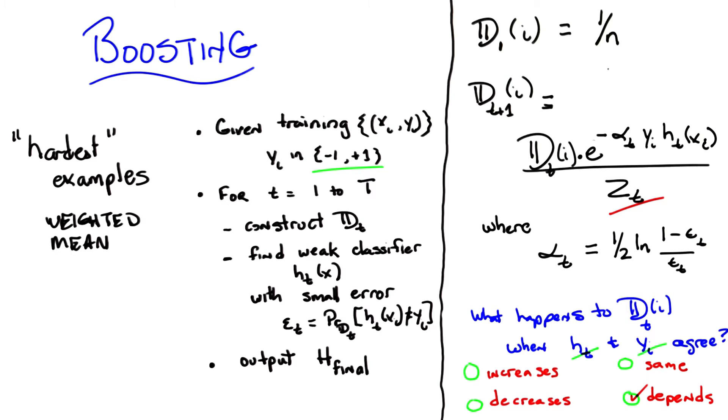So I could ask a similar question, which is, well, what happens when they disagree, and at least one other example agrees? Then what happens? Yeah, then it should increase.